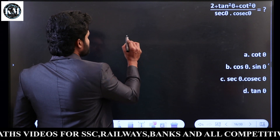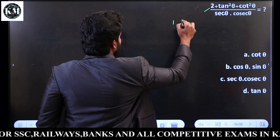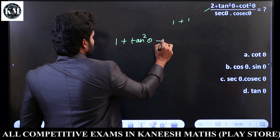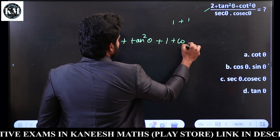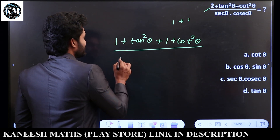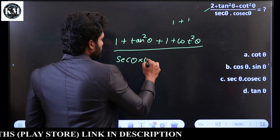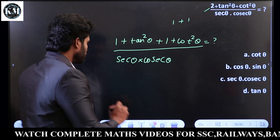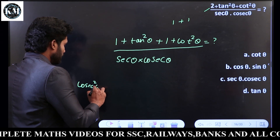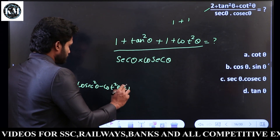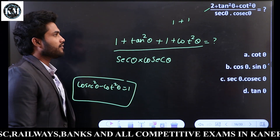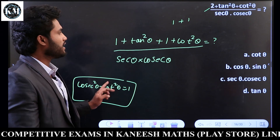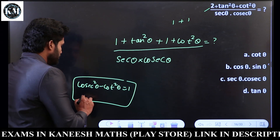What we do is split 2 as 1 plus 1. So we get: 1 plus tan square theta, and 1 plus cot square theta. Now recall the formulas: cosecant square theta minus cot square theta is equal to 1, so cot square theta equals cosecant square theta minus 1, and 1 plus cot square theta is equal to cosecant square theta.